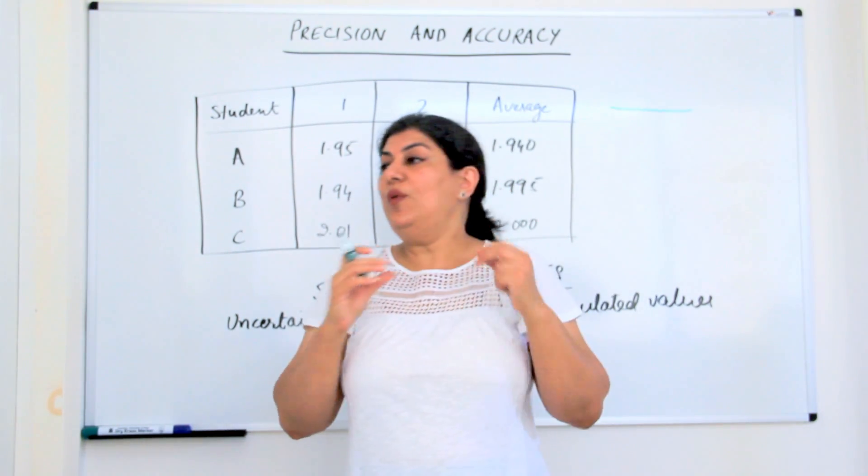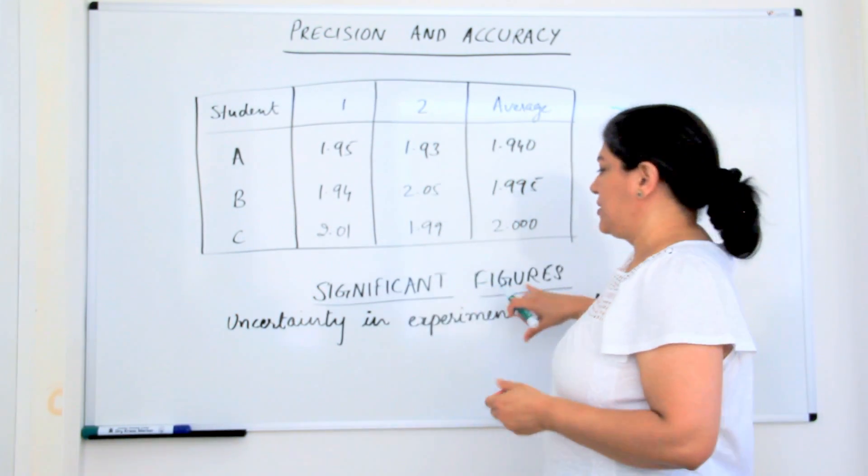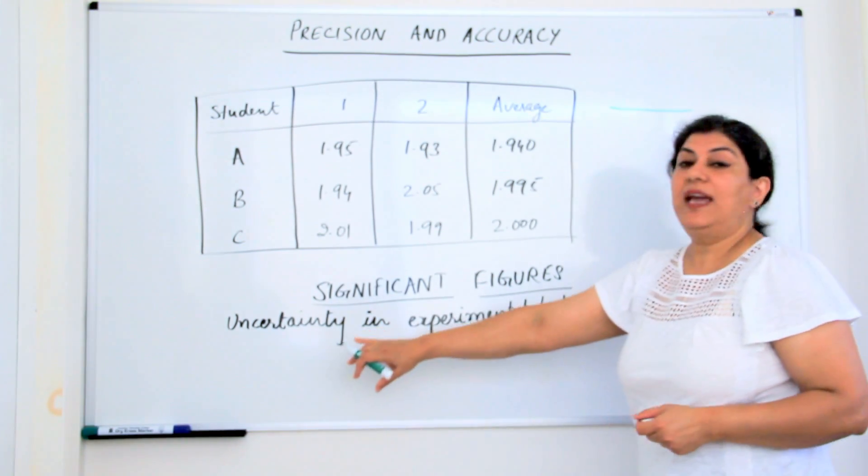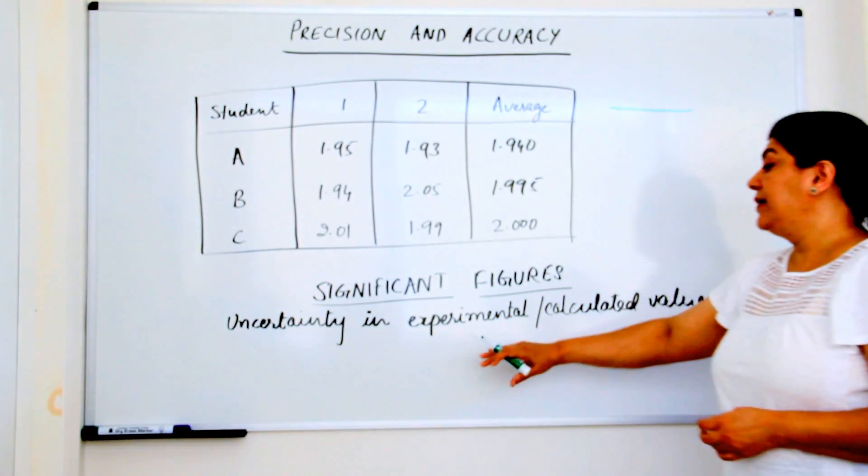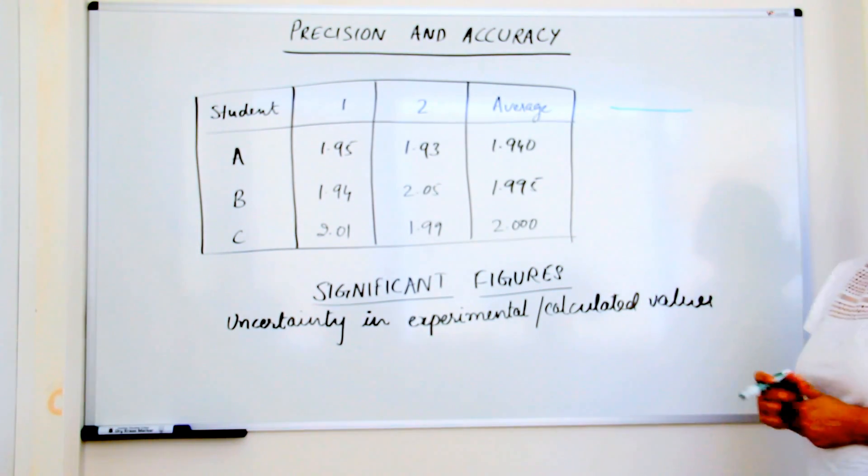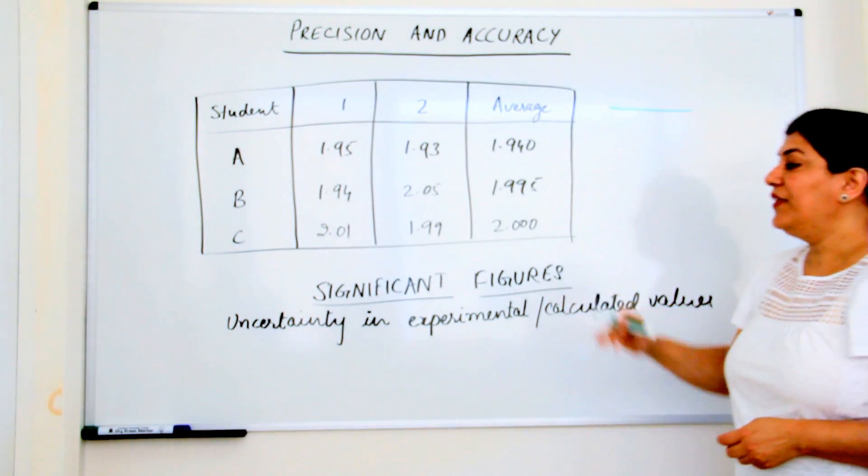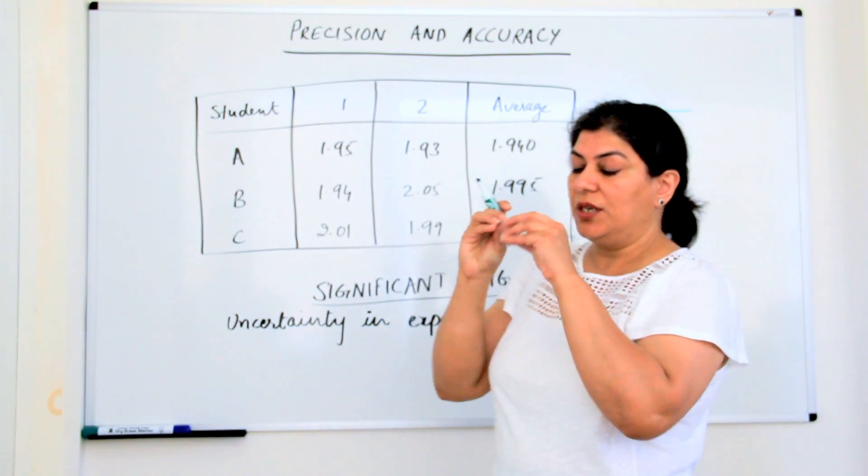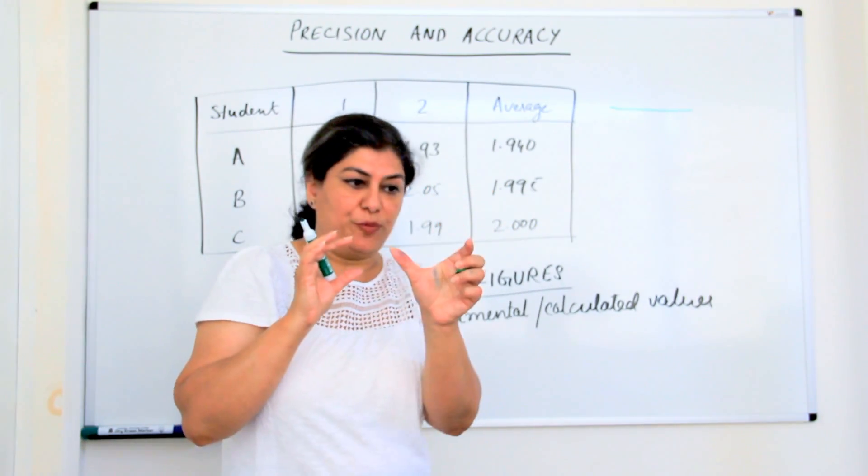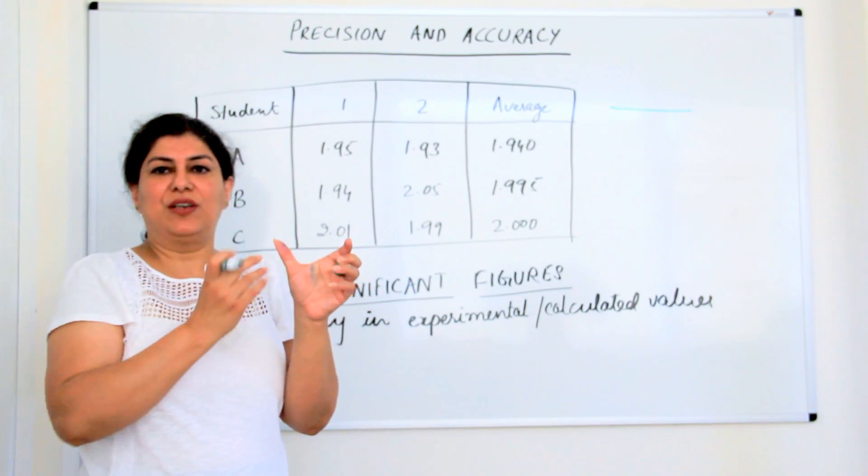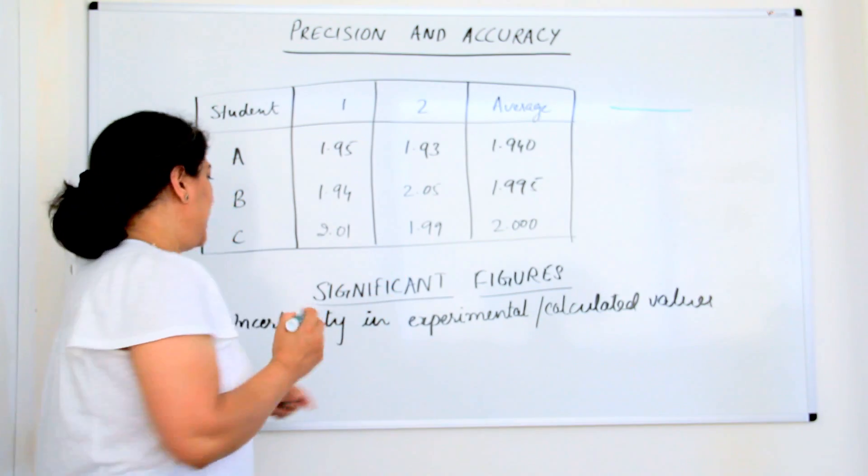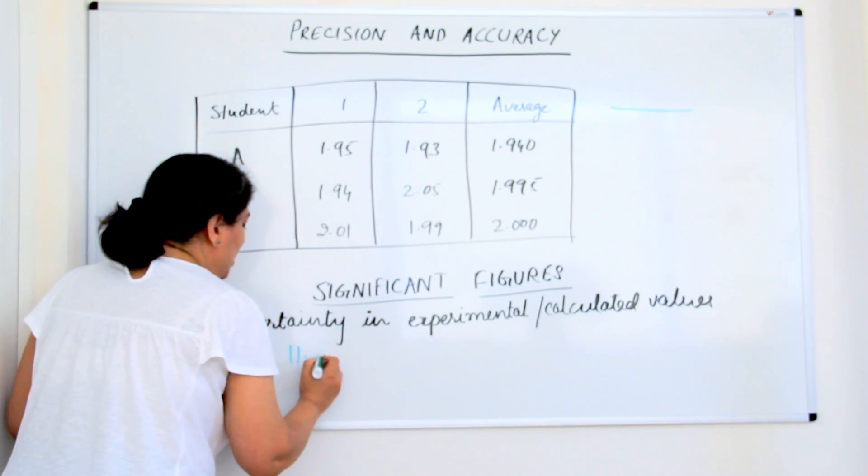Therefore, we use significant figures. Significant figures give you an idea of the uncertainty in the experimental or the calculated values. Significant figures are numbers. Certain terms that we use, like this measurement has 3 significant figures, 4 significant figures. Let's say it is 11.2.